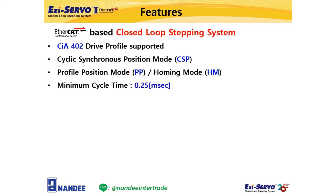The minimum cycle time is 0.25 milliseconds. The cycle time is the time required for communication between the master and the slave, and the minimum cycle time is the time it takes for the slave to receive, process, and respond to a packet. In general, the minimum cycle time of stepping motor drives on the market is 0.5 milliseconds, but Fastech's product has a shorter minimum cycle time of 0.25 milliseconds.